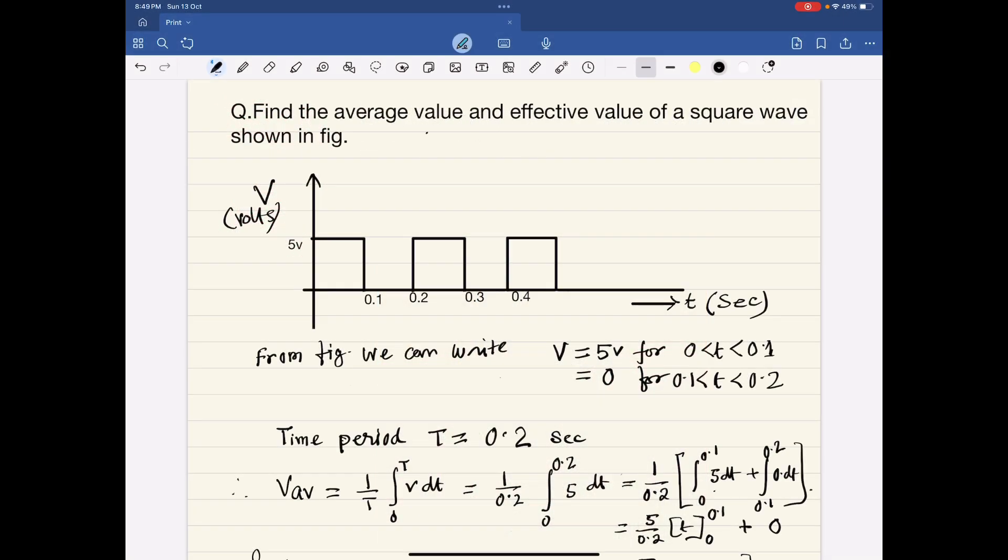Today we will find the average value and effective value. That is V average. Effective value means V rms of a square wave.